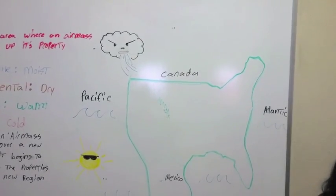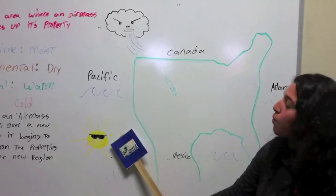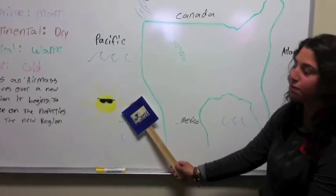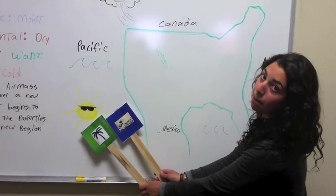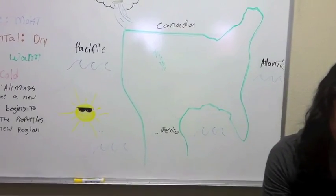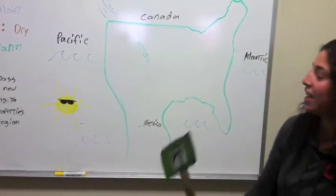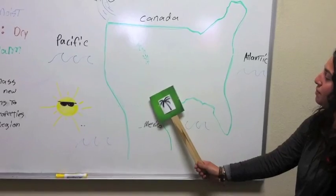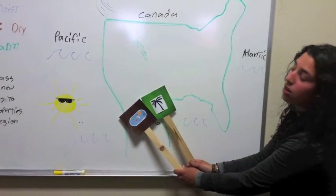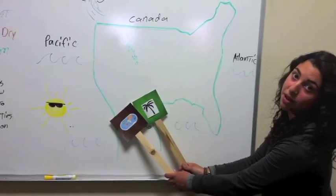If we continue down or over the ocean, it's tropical, so it'll be a tropical maritime air mass. If we keep moving and it stays tropical but it's over land, it'll be continental as well — tropical continental.